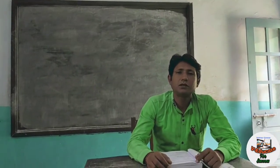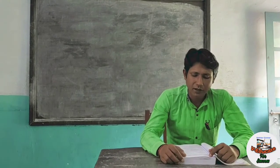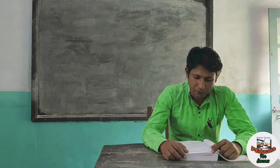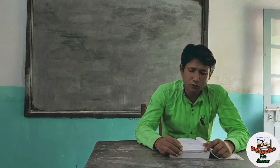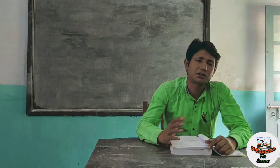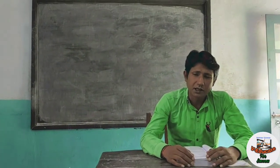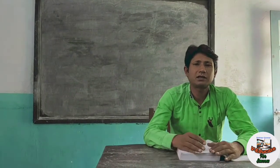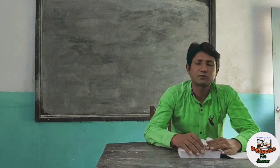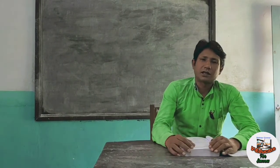Receipt and Payment Account real account होता है। Answer in one word: The major source of income of non-trading organization — sources कई हैं, लेकिन major sources हैं subscription और membership fees। इसके अलावा life membership fees, donation, levies, sale of old furniture भी होती है — कुछ capital items होते हैं, कुछ revenue items। यदि दो main sources लिखने हों तो लिखिए: subscription and membership fees।